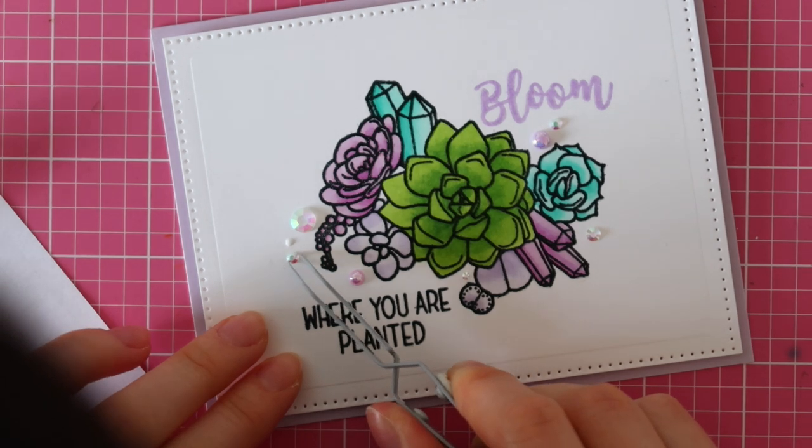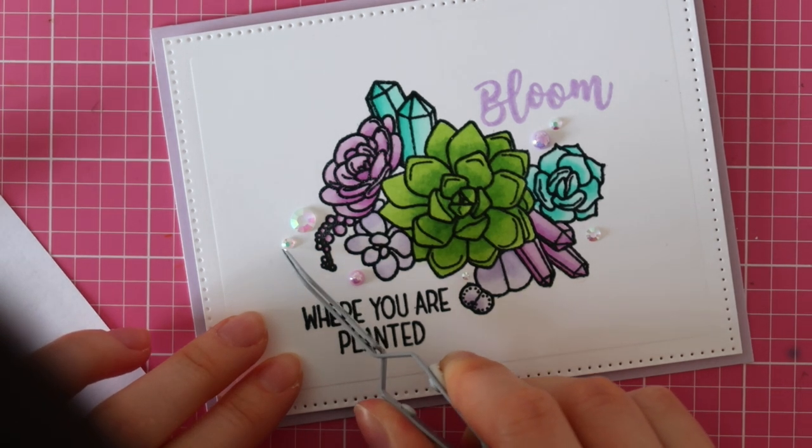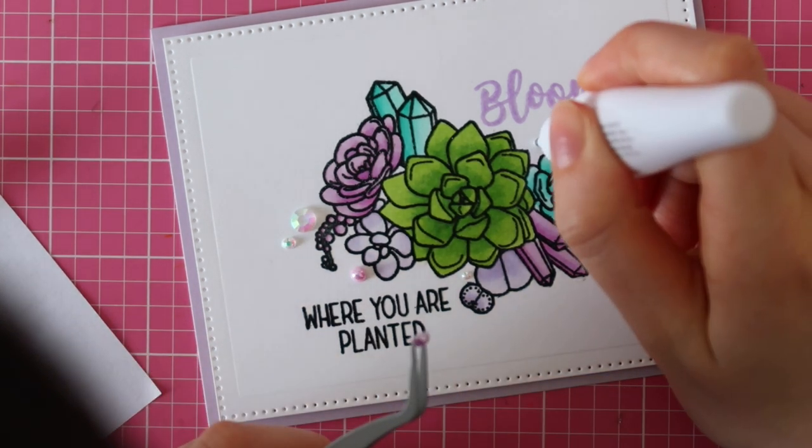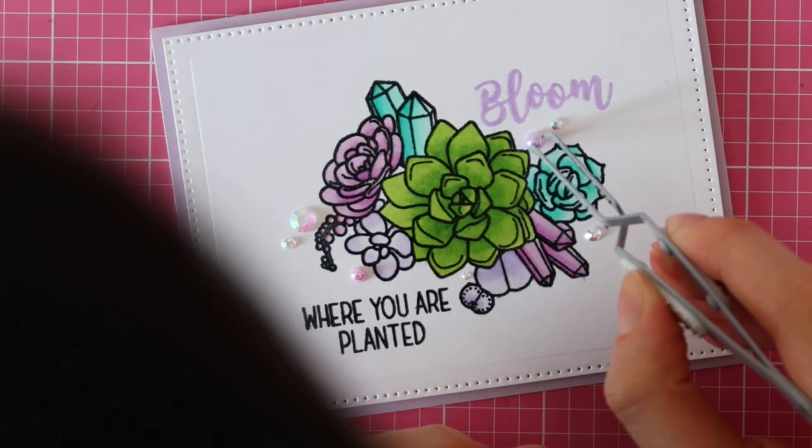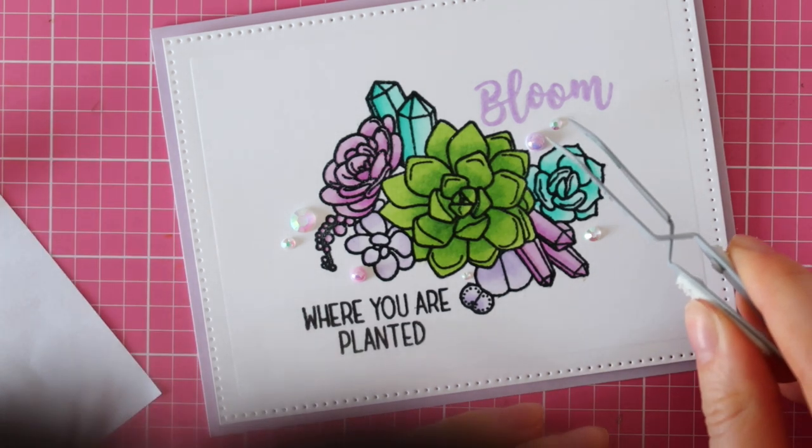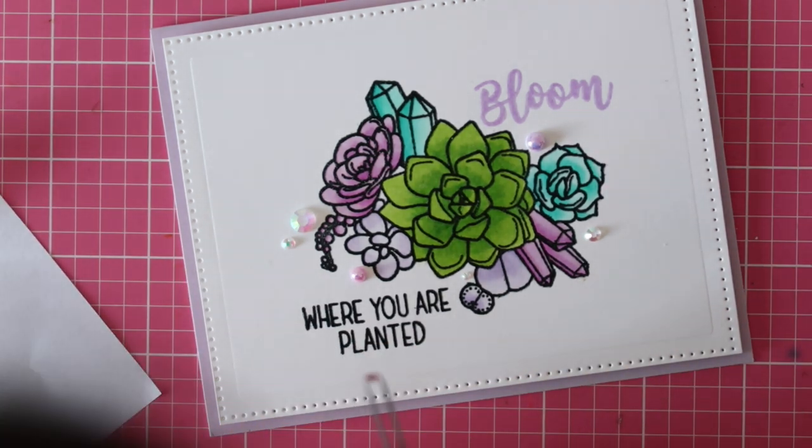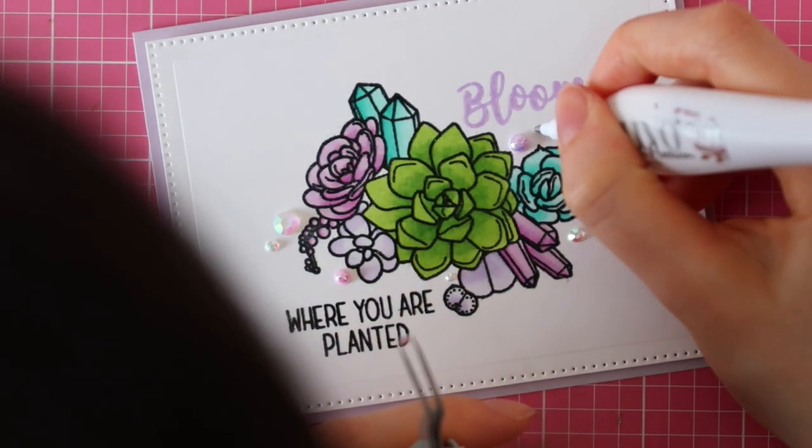And here I am using my Tonic Nouveau Smooth Precision glue pen to adhere the shiny baubles and the crystallized unicorn tears from Trinity Stamps. This was the first time I used this glue pen from Tonic and so far I really love it. And I'll be using it more in the future so I can share my final thoughts on this pen with you guys.